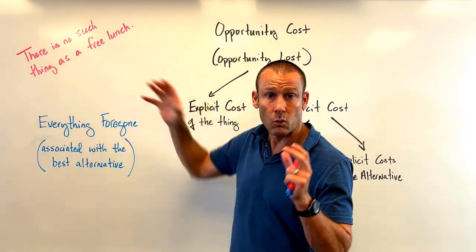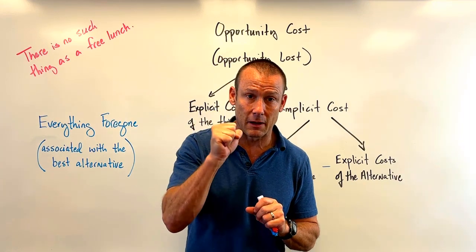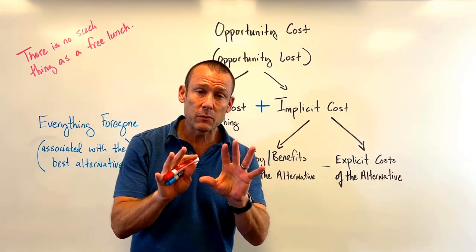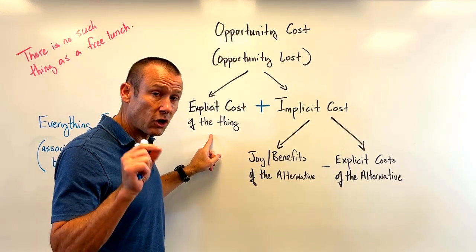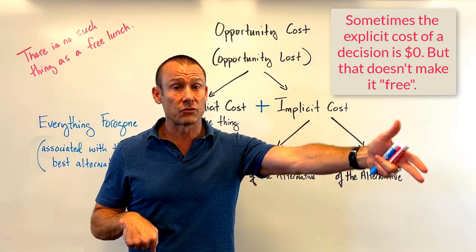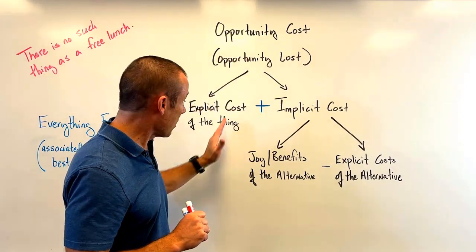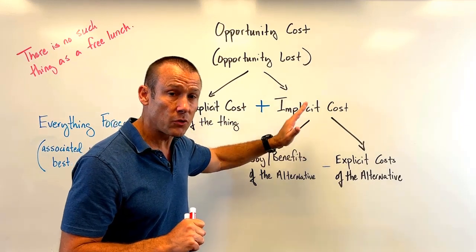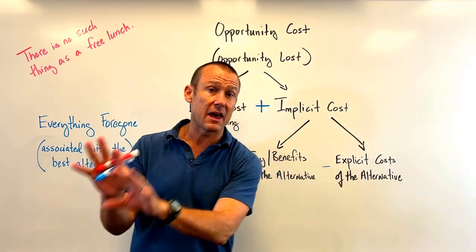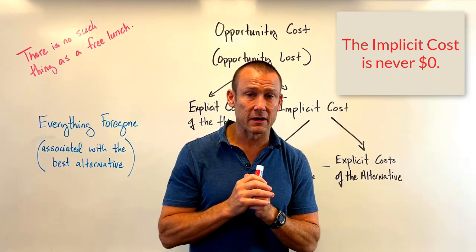This gets us to an important saying: there is no such thing as a free lunch. The explicit cost could be zero, and the layperson says that thing is free — but not the economist. The real concept of cost includes not just the explicit cost but also the implicit cost. Since every decision has an alternative, every decision has a cost.